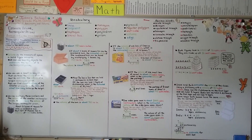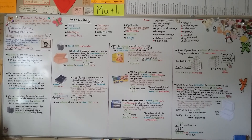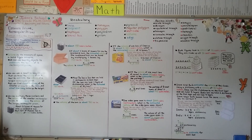Remember to find how many objects fit in the first layer, then multiply by how many layers fit in the rectangular prism. Our next lesson, 11.8, will talk about volume of rectangular prisms — the base multiplied by the height, and length multiplied by width multiplied by height. Have a wonderful day!